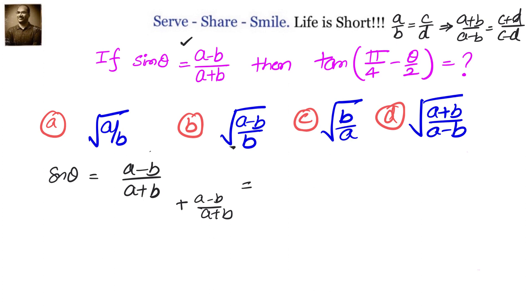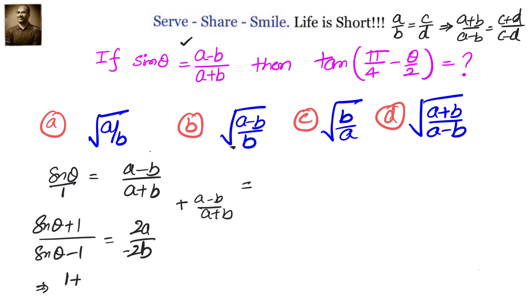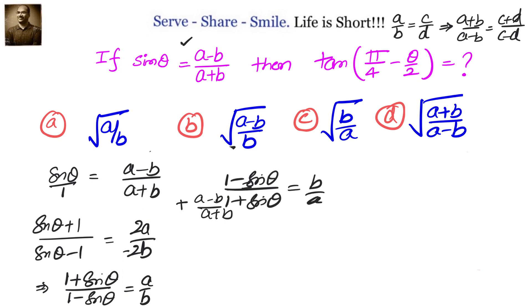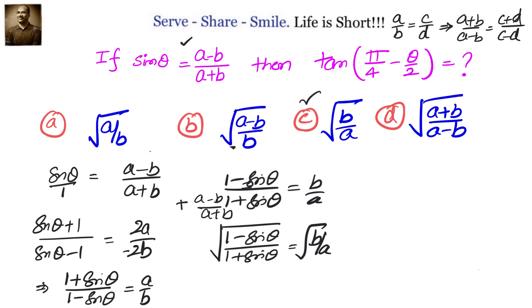Applying componendo-dividendo to sin θ = (a minus b)/(a plus b), we get (sin θ plus 1)/(sin θ minus 1) equals (a minus b plus a plus b)/(a minus b minus a minus b), which is 2a divided by minus 2b. Rearranging gives (1 plus sin θ)/(1 minus sin θ) = a/b. Taking the reciprocal: (1 minus sin θ)/(1 plus sin θ) = b/a. Taking square roots: √(1 minus sin θ)/√(1 plus sin θ) = √(b/a).